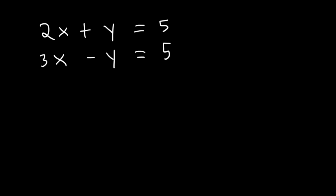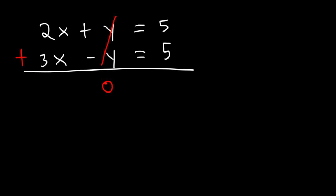By the way, whenever you have two variables, you need two equations to solve it. To use the elimination method, we need to add the two equations. Notice that if we add the two equations, the y variable cancels. y plus negative y is equal to 0. 2x plus 3x is 5x.